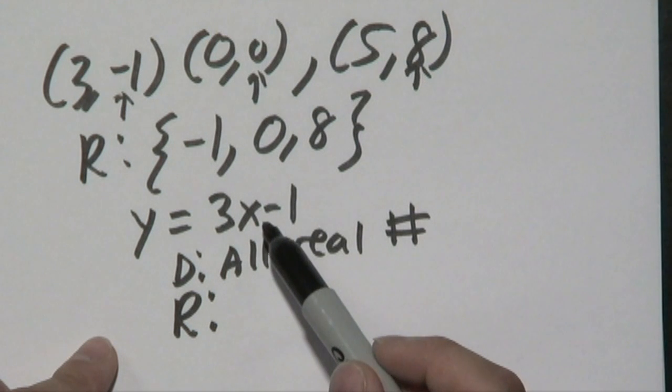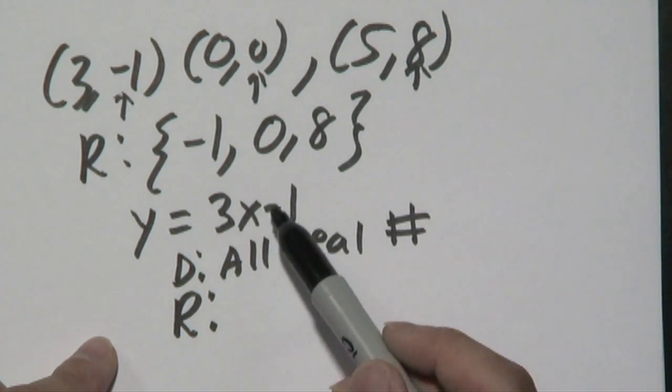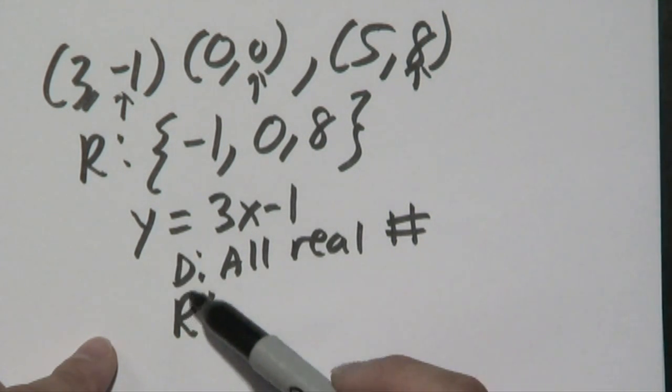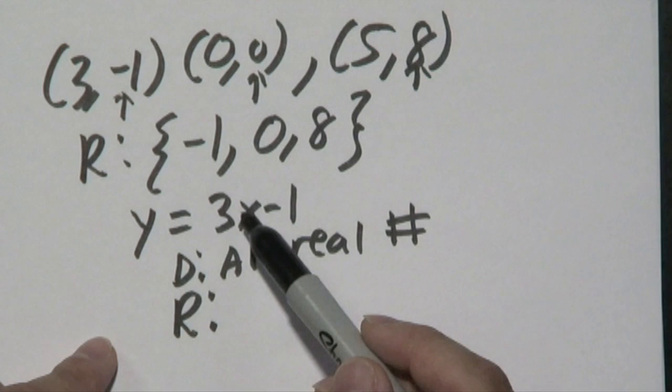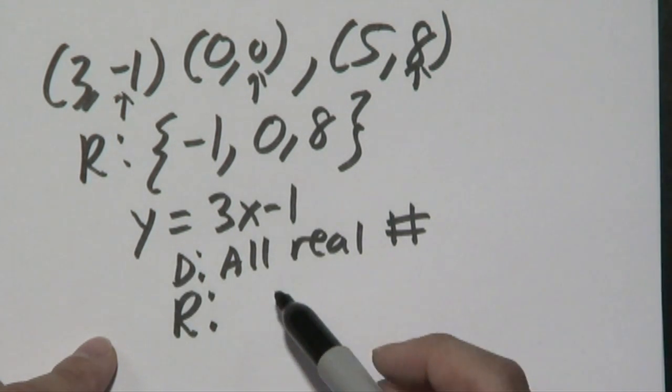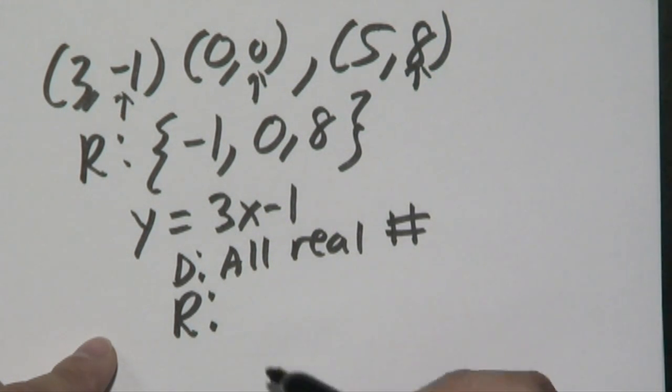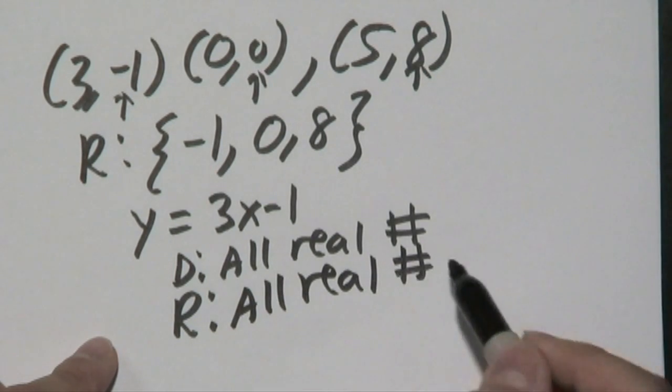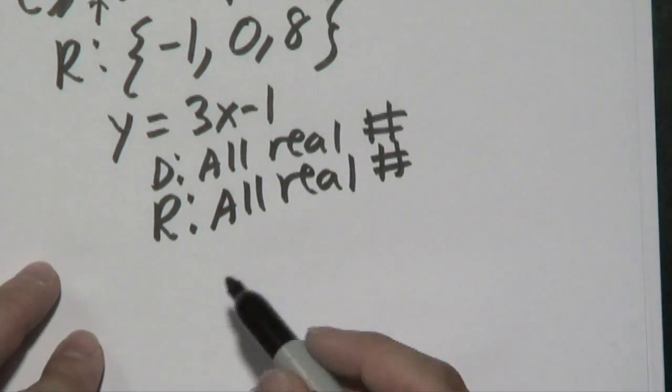Now in terms of your range, if you notice on this particular function, any number you can plug in for X - if you plug in a positive number for X, you're going to get a positive number for Y. So the range will include positive numbers. But when you plug in a negative number for X, you're going to get a negative number for Y as well. So in this case your range, which is your set of Y values, could cover all real numbers because it covers all the positives and all the negatives and it will also give you zero.